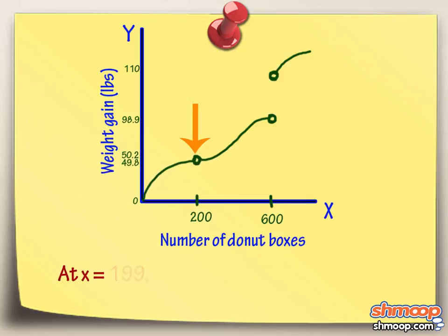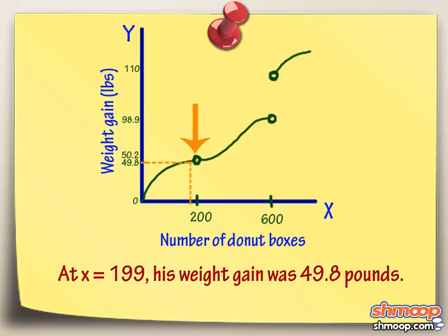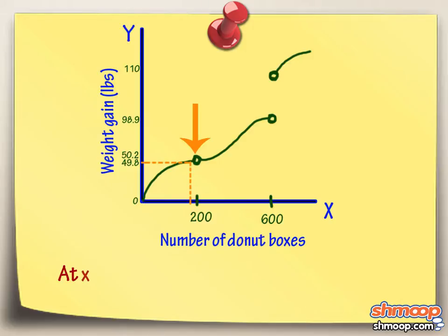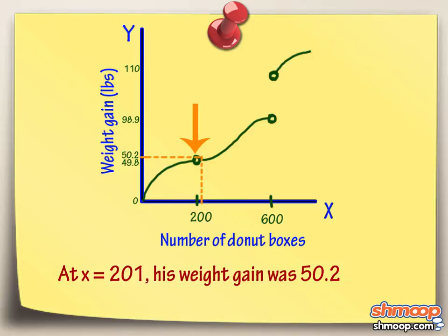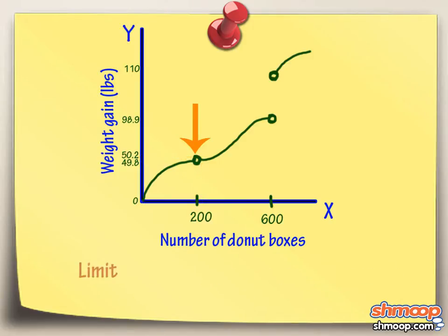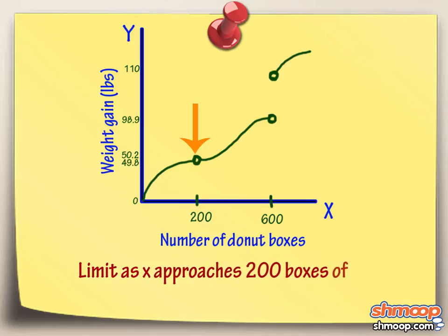At X equals 199, his weight gain was 49.8 pounds. At X equals 201, his weight gain was 50.2 pounds. It looks like the limit, as X approaches 200 boxes of donuts, is about 50 pounds.